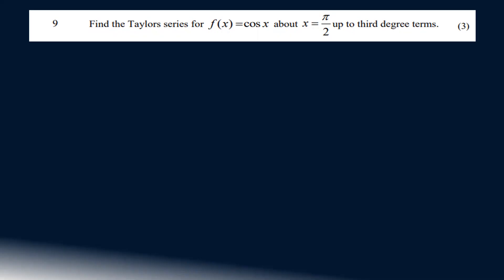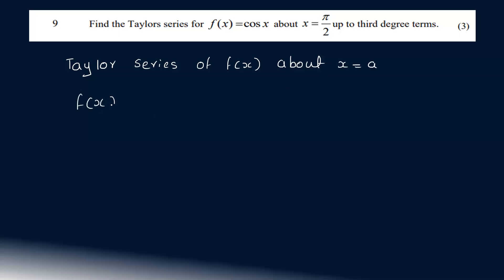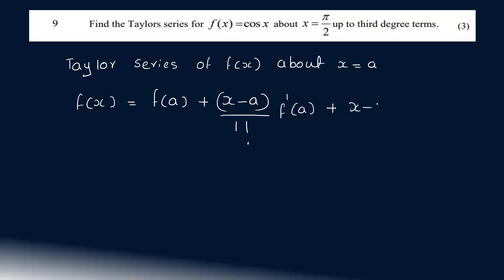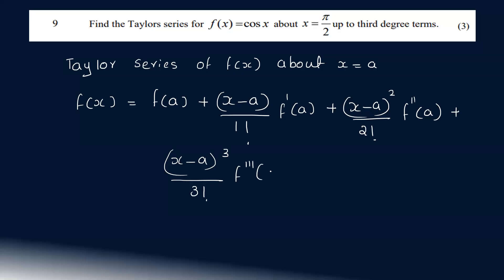So what we have to do: f(x) = cos(x), and we have to find the Taylor series. The Taylor series of f(x) about x = a is given by: f(x) = f(a) + (x − a)/1! · f'(a) + (x − a)²/2! · f''(a) + (x − a)³/3! · f'''(a) + and so on.